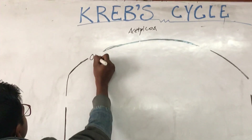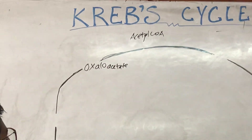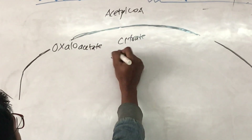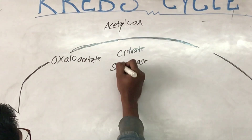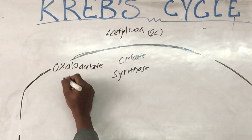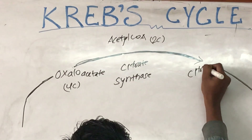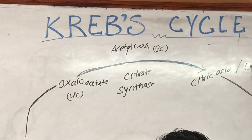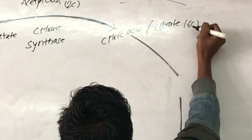Acetyl Coenzyme A, a 2-carbon compound, will react with oxaloacetate, a 4-carbon compound, in the presence of citrate synthase to form citric acid or citrate, which is a 6-carbon compound.